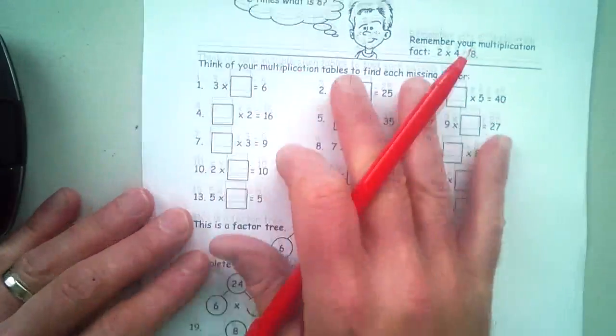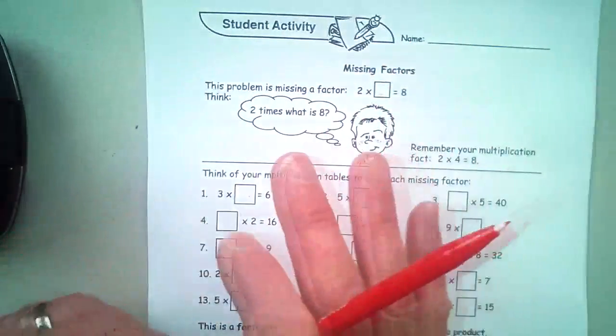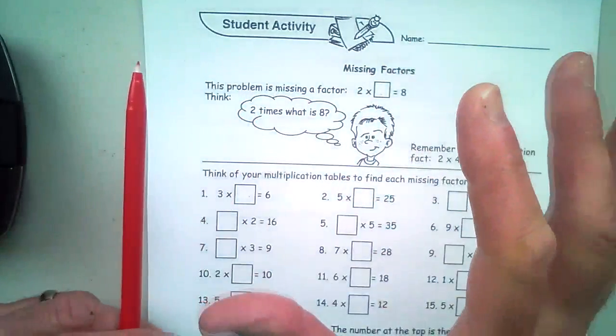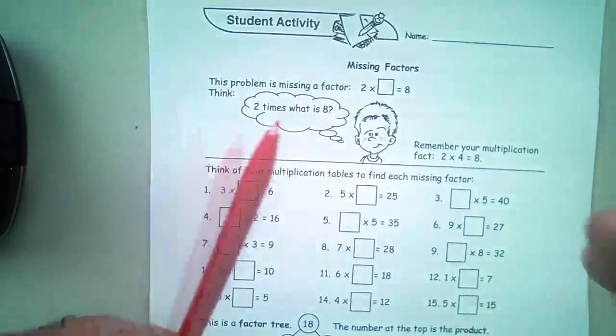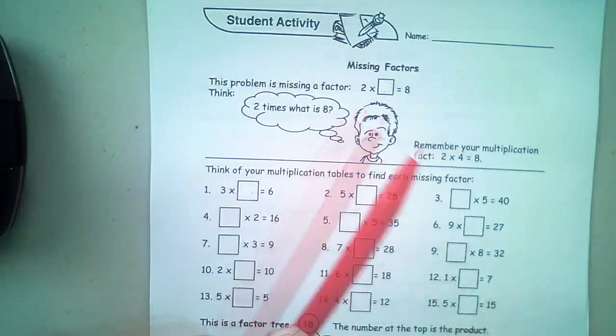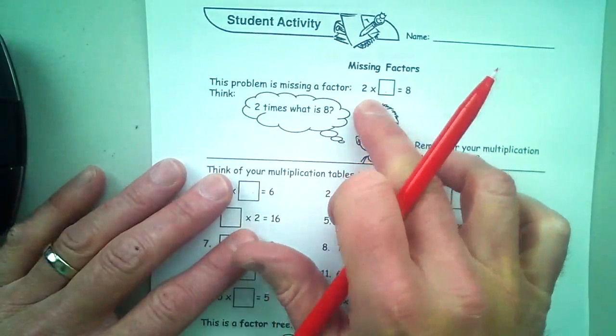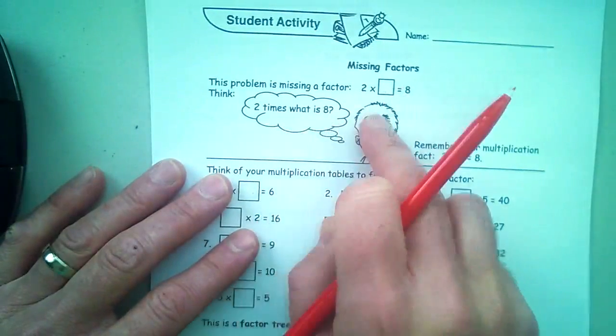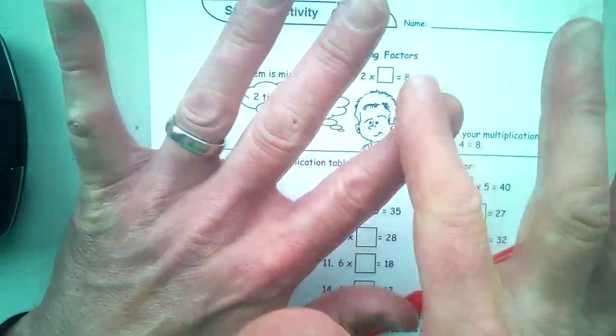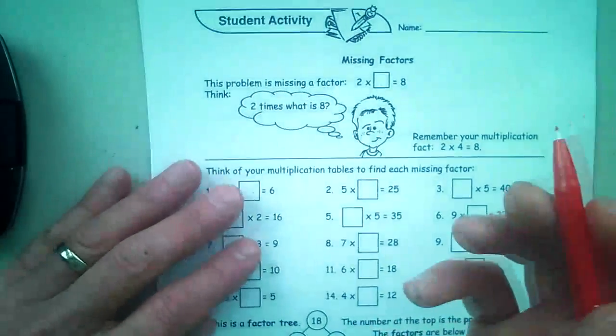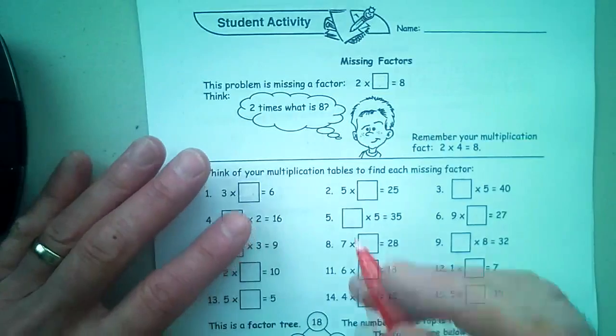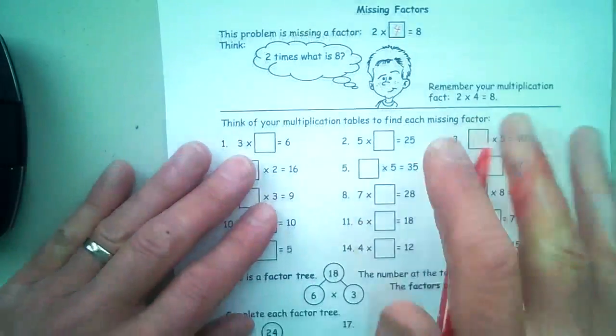Same thing with math. With these, if you see them enough times you don't actually have to go through your timetables. There's always going to be some tough ones but if you do them enough they become second nature. For example, you see the two and you know two times what is eight. Now you could count on, two, four, six, eight, you know that's four times. However, at this point you would probably know that you've done it enough times that it's just gonna be the four.